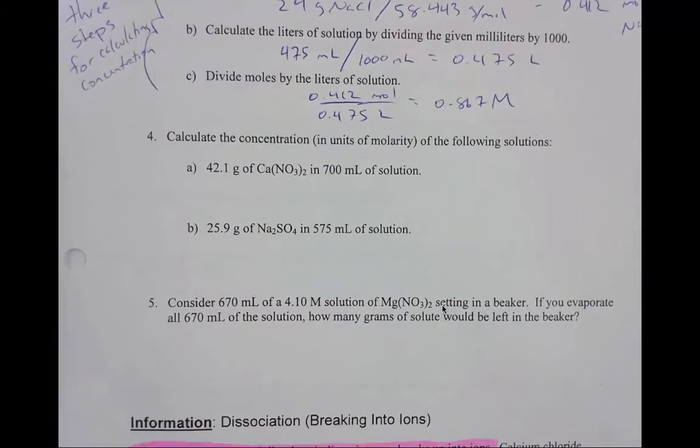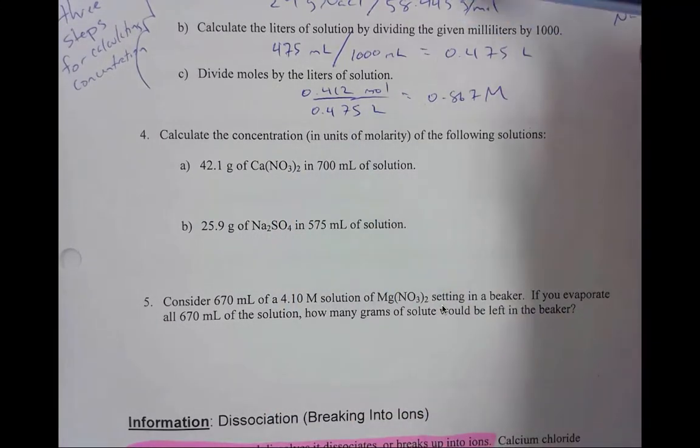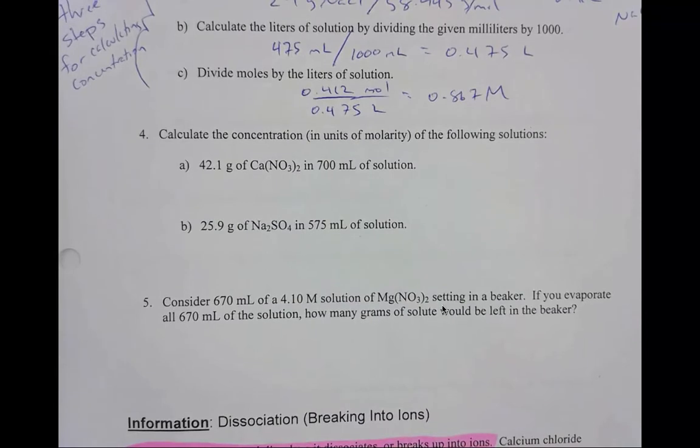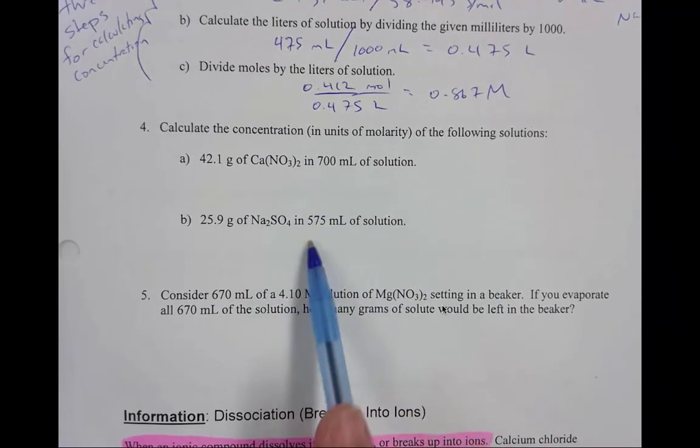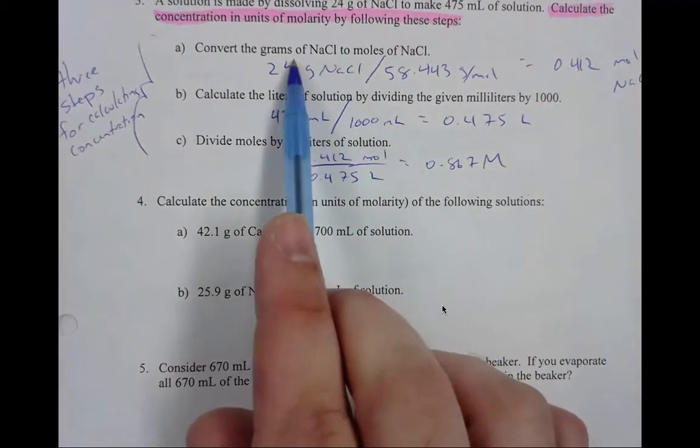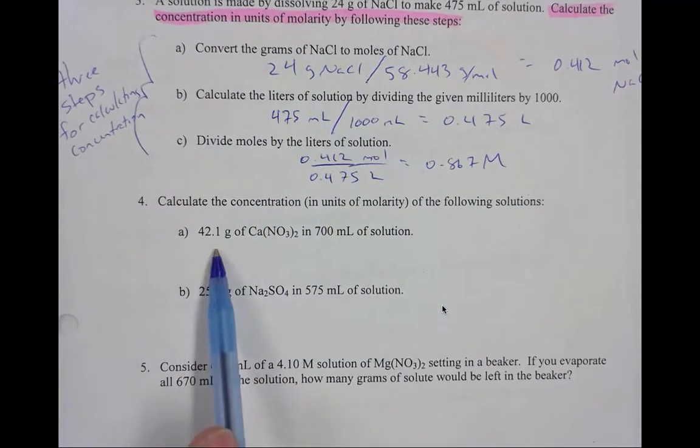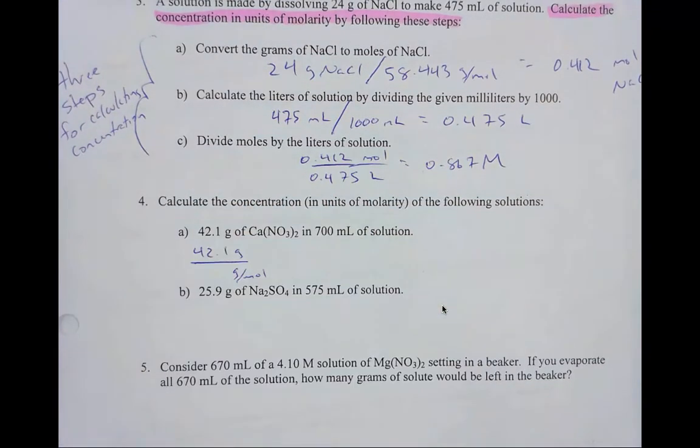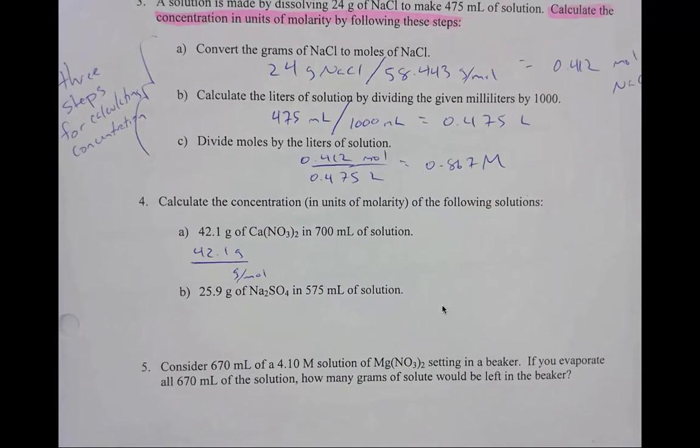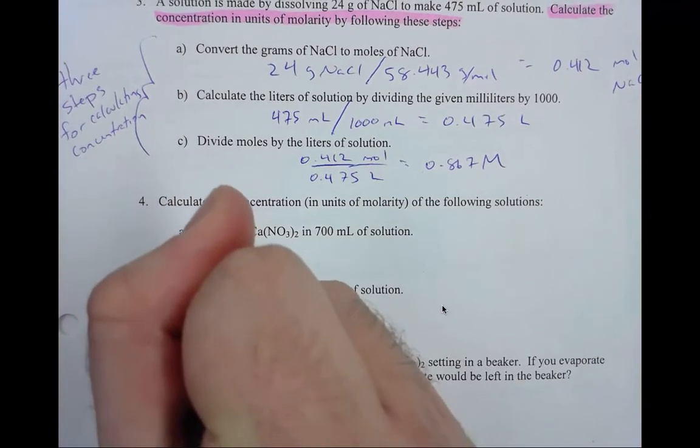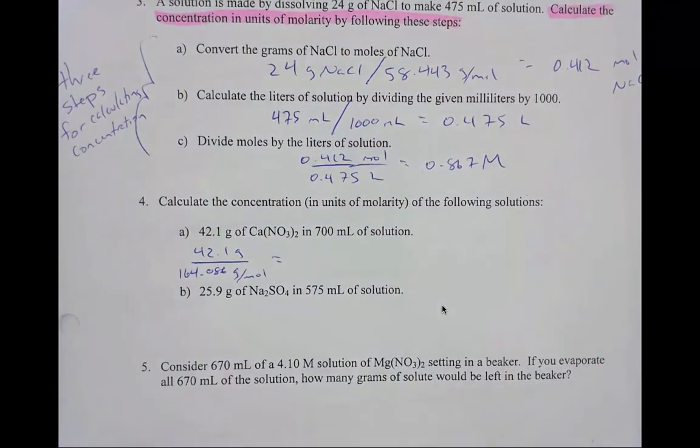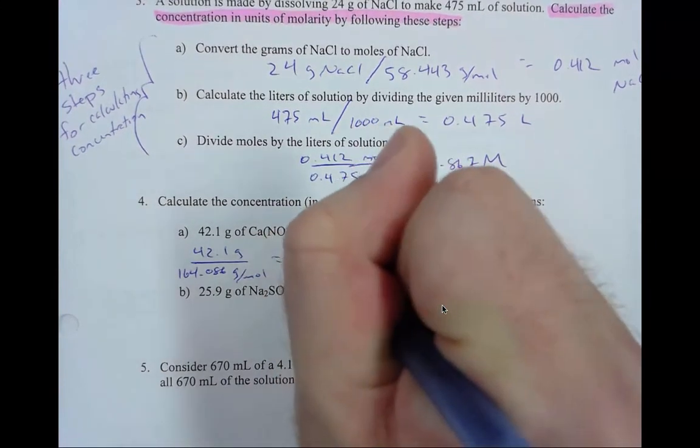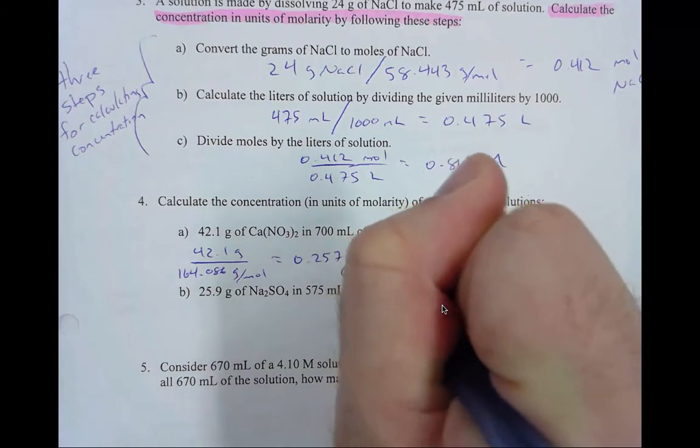So next, question four. Question four is calculating molarity, except it doesn't walk you through the three steps. So I'll help you solve 4A, and then afterwards, you can mimic what I do in 4A with 4B and 5. So when we look at 4A, remember guys, the first thing to do is to convert our grams into moles. So we can take our 42.1 grams. Remember, we just have to divide by the molar mass. Remember guys, we look at the periodic table to find the molar mass. When you find the molar mass of calcium nitrate, it comes out to 164.086. Then when you solve for that, just type it into your calculator, 0.257 moles of calcium nitrate.